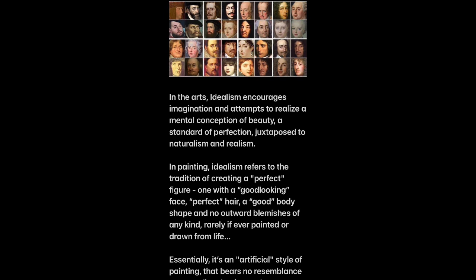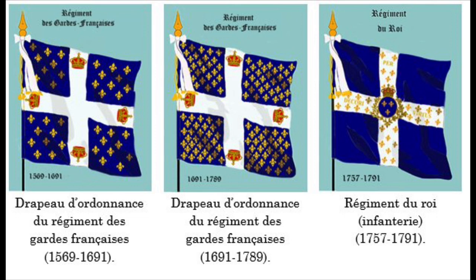In a society dominated increasingly by secular leaders and powerful courts, images of important figures were a means to affirm authority. Note that idealism in painting refers to a tradition of creating a perfect figure — one with a good-looking face, perfect hair, good shape, and no outward blemishes — rarely painted from life. It's an artificial style bearing no resemblance to naturalism. That's the paintings we see today, because if you look at paintings of so-called white kings and queens, nobody really looks like that and you can't find their lineage.